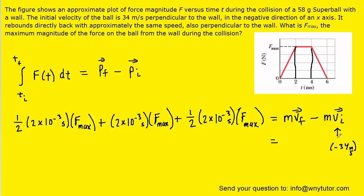And then for the final velocity, we are told that the ball rebounds directly back with approximately the same speed. So that means that the final velocity is going to be positive 34 meters per second because it's rebounded in the opposite direction. And then we'll fill in the mass as well.